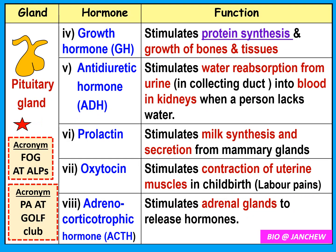The fourth hormone from the pituitary gland is growth hormone (GH). It stimulates the growth of bones and tissues, and also stimulates protein synthesis in the body — add that point as discussed in the textbook. Antidiuretic hormone (ADH) stimulates water reabsorption from urine in the collecting duct back into the blood in the kidneys, particularly when a person lacks water. ADH is produced in larger quantities when a person does not drink enough water, so water can be reabsorbed back into the blood.